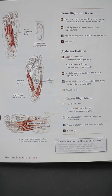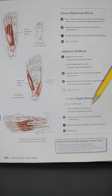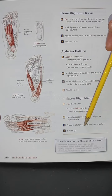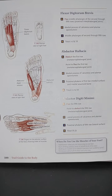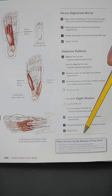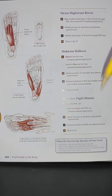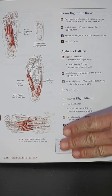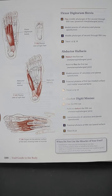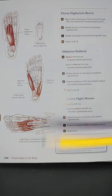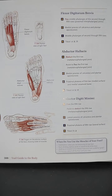Origin of the abductor digiti minimi is the lateral process of the calcaneus and plantar aponeurosis, and insertion is the proximal phalanx of the fifth toe at the lateral surface. Nerve innervation is the tibial nerve, S1 and S2. Notice the hand positioning: the index finger is the abductor hallucis, the middle is the flexor digitorum brevis, and the digiti minimi is at the further end. See you guys on page 389.